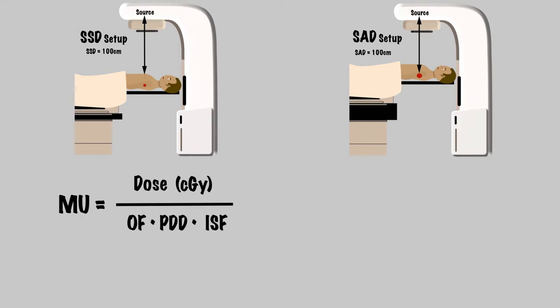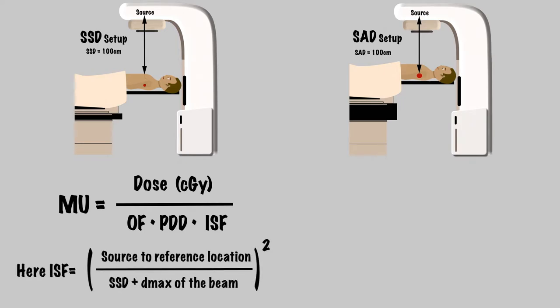We had mentioned our beams were referenced at Dmax, and for SSD setups, we would be using a distance of 100 centimeters. So you can see that the inverse square factor would equal 1.